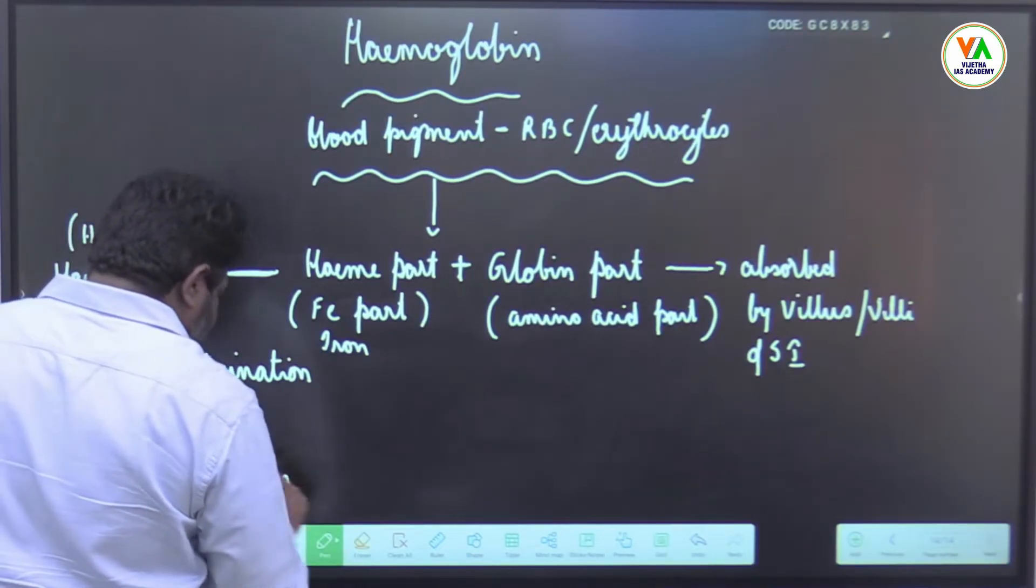The globin part is absorbed by villi of small intestine and is utilized. This heme part - haptoglobins bind to this iron and prevents elimination, otherwise they will be eliminated from the fecal matter. With the help of transferrins, transferrins transfer this heme iron to bone marrow, and bone marrow is the site of production of RBC and hemoglobin.